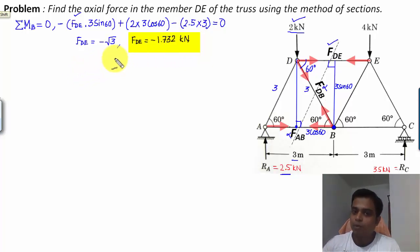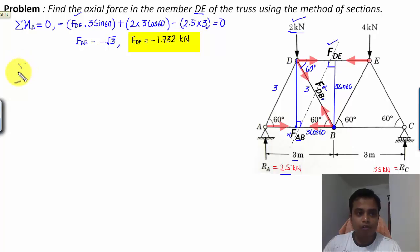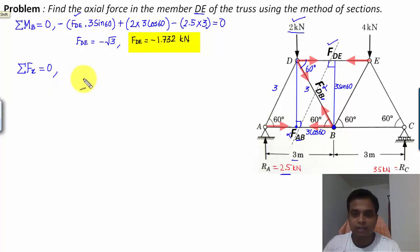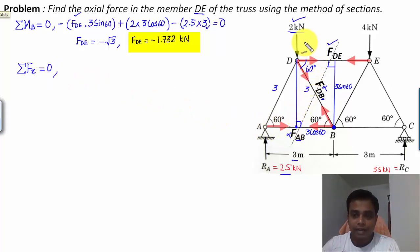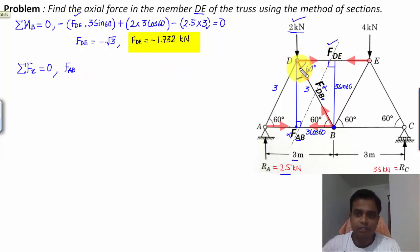Although we only needed F_DE, let me also find the axial forces in members DB and AB. Using summation of Fx = 0 for the portion to the left of the section, we have: F_AB (towards the right, positive) plus F_DE (towards the right, positive) plus F_DB cos 60° (horizontal component of F_DB, towards the right, positive) equals zero. This is Equation 1 for the x-direction.